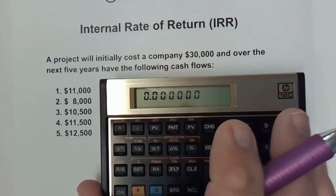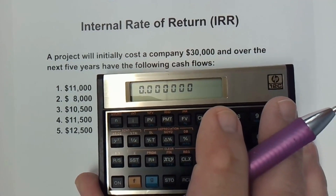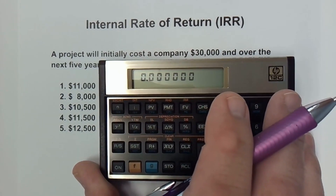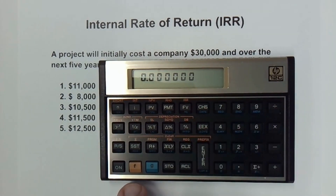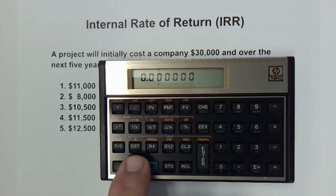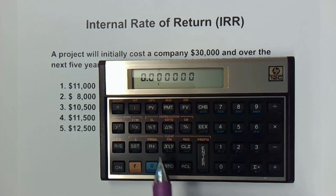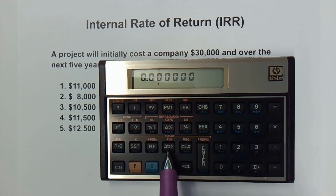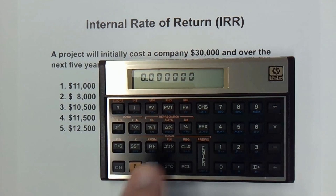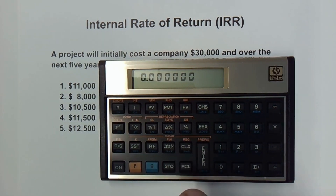Let's get to calculating the internal rate of return. The first thing I want to do is clear out the financials. So I'm going to hit the orange F button — you can see it says 'clear' along here, and right above is 'Clear FIN,' which is going to clear the financials. And just to be sure, I'll hit the CLX. I've cleared out everything.